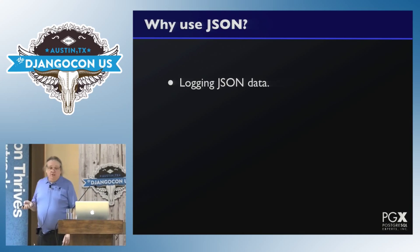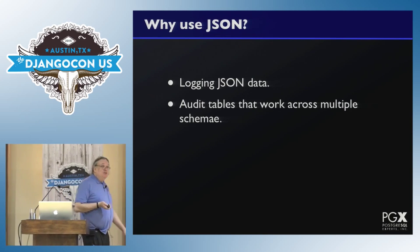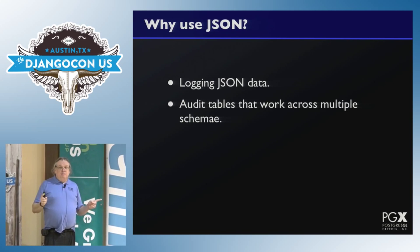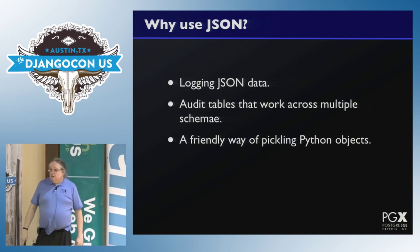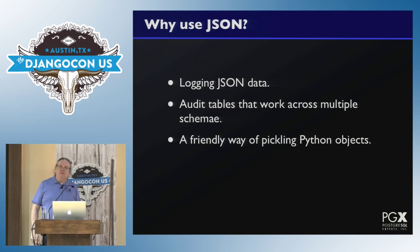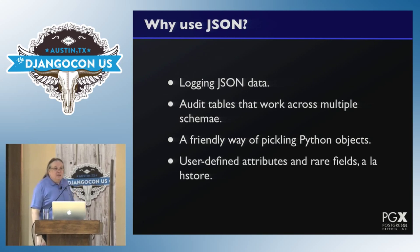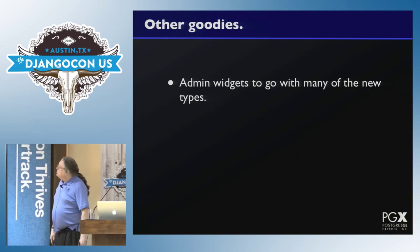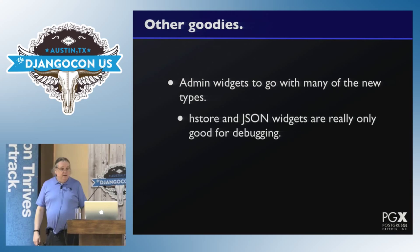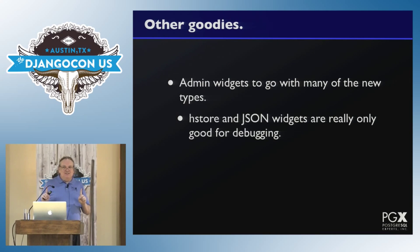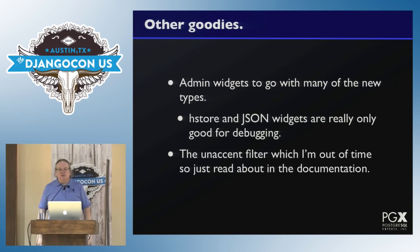Why would you use JSON support in general? You're logging JSON data. You want audit tables that work across multiple schemas — a single audit table that handles all other tables rather than one audit table per table. It's a nice way of pickling Python objects so other tools can read them. And for all the things you used to use hstore for — like user-defined objects and rare fields. The new fields come with admin widgets that are really cool. Hstore and JSON widgets are really only good for debugging since you basically get the raw text. And there's also the unaccent filter, which I'm out of time for, so just read the documentation.